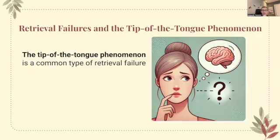Now we're going to look at retrieval failures and the tip of the tongue phenomenon. The tip of the tongue phenomenon is a common type of retrieval failure where information feels like it's just out of reach, even though it's stored in memory. This happens when we're unable to access certain details at the moment, such as struggling to recall a familiar name during a conversation, or when you're writing an essay and you know the perfect word but just can't retrieve it — it's right on the tip of your tongue. This highlights the challenge within our memory system where, despite the presence of information, temporary barriers prevent us from retrieving it.